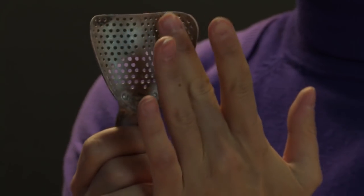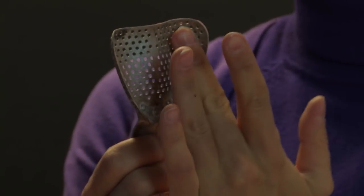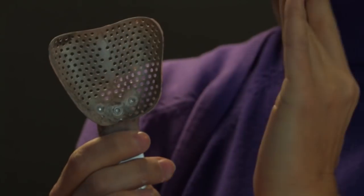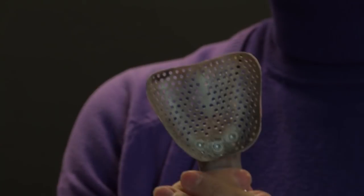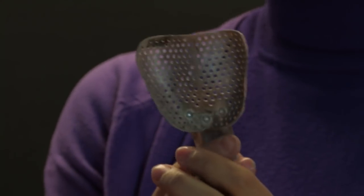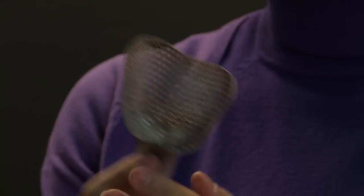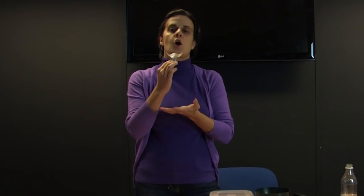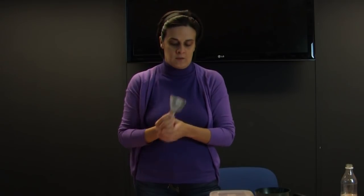This edentulous tray is much shallower and much curvier than the dentate tray. This is because the tray will fit over the patient's alveolar ridge where there are no teeth in place.